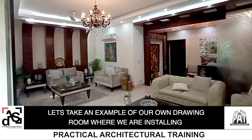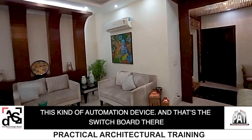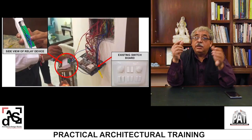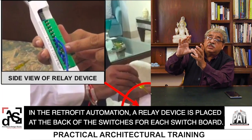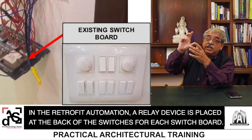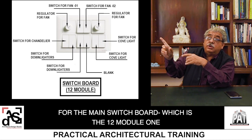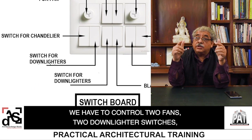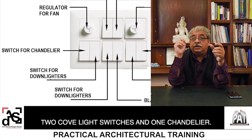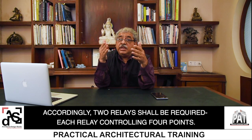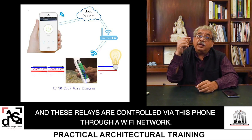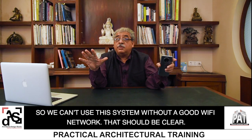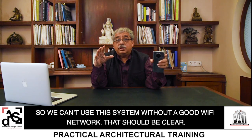Let's take an example of our own drawing room where we are installing this kind of automation device — that's the switchboard where we shall be fitting this device. In retrofit automation, a relay device is placed at the back of the switches for each switchboard. For the main switchboard, which is the 12-module one, we have to control two fans, two downlighter switches, two cove light switches and one chandelier. Accordingly, two relays shall be required, each relay controlling four points. These relays are controlled via the phone through a wi-fi network, so we can't use this system without a very good wi-fi network.